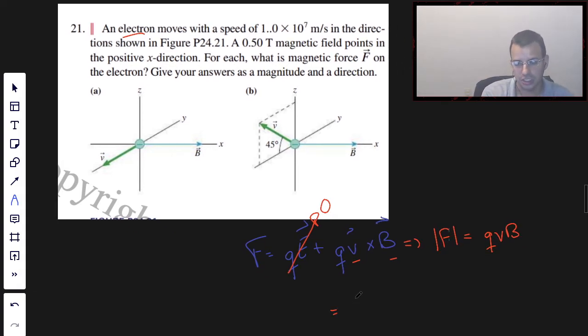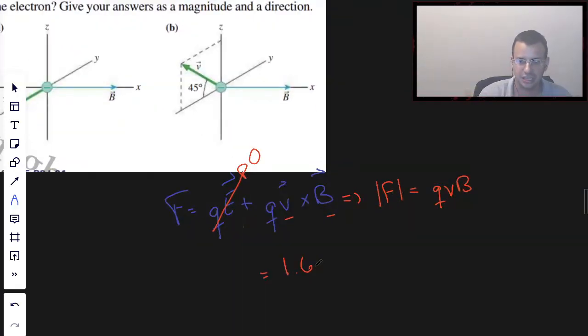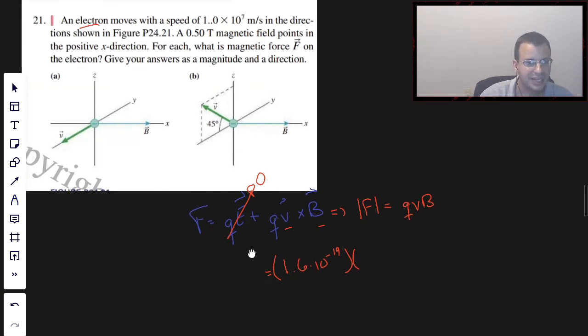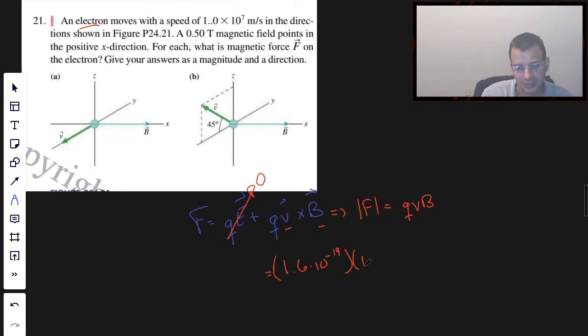And I'm going to find that real quick. So that's going to be 1.6×10^-19. Yes. And it's negative, but since we're just doing magnitude, I'm going to drop the negative.